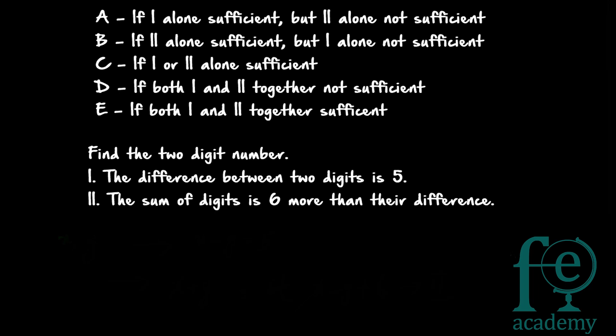Find the two-digit number. Statement one: the difference between the two digits is 5. Let us take the digits to be x and y. So we get the equation x minus y is equal to 5. Whatever the statement given, you have to convert it into an equation — that is the first step. So x minus y equals 5 is the equation from statement one.